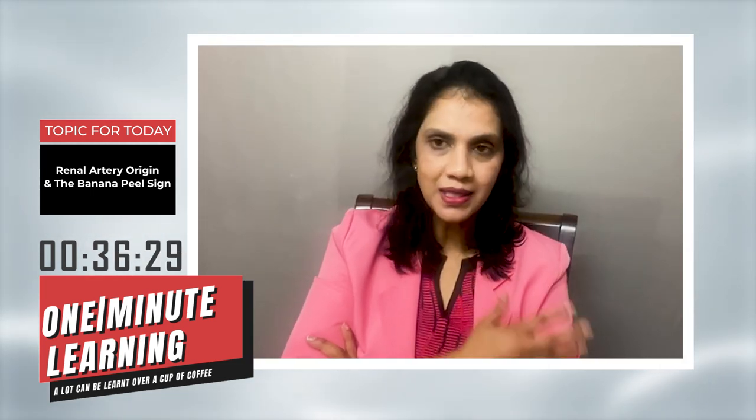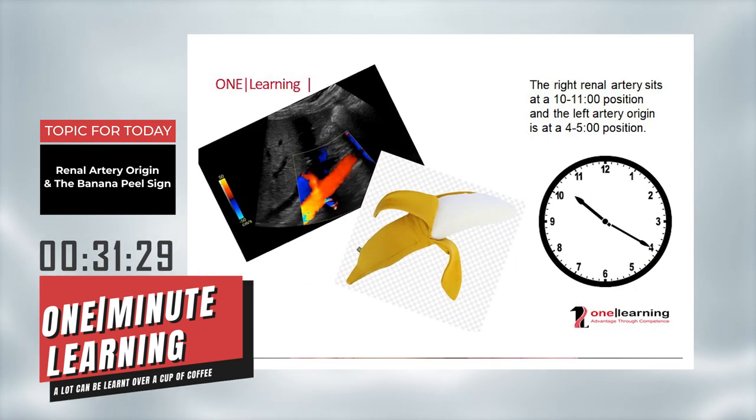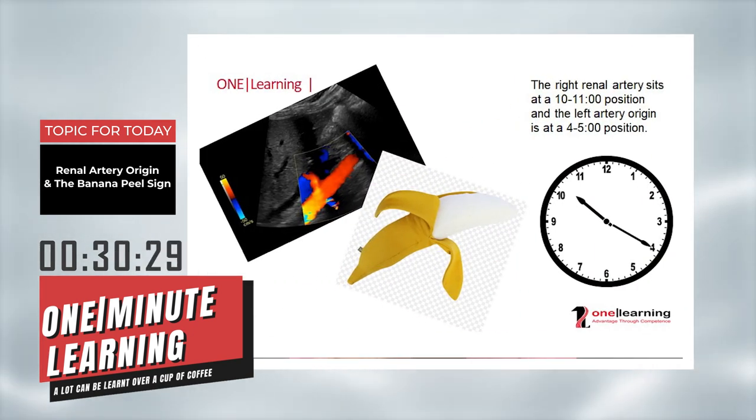This is because the right renal artery originates slightly cranially as a lateral branch, and the left renal artery originates slightly inferior on the left side. That is why we see them in that characteristic banana peel appearance.